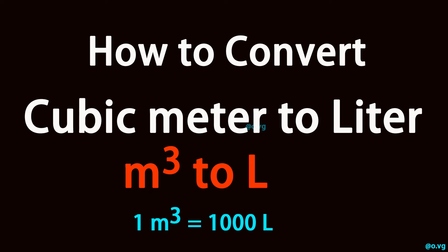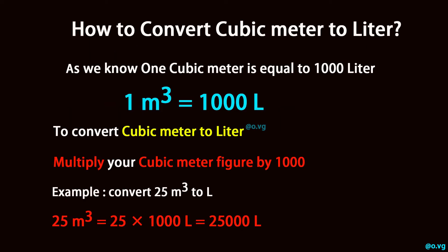How to convert cubic meter to liter. As we know, one cubic meter is equal to 1,000 liters. To convert cubic meter to liter, multiply your cubic meter figure by 1,000.